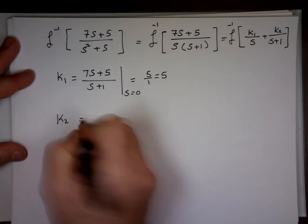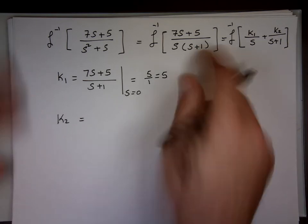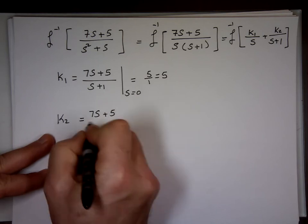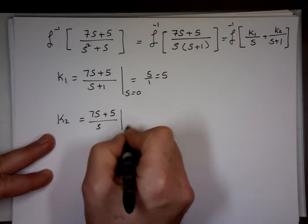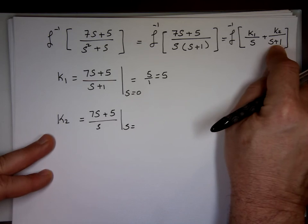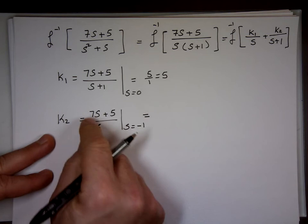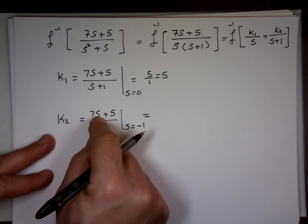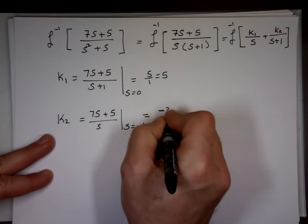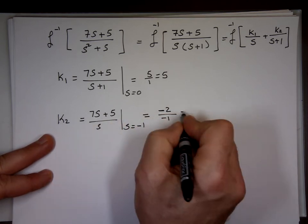K2 is sitting on top of S+1. Take S+1 out of this. When S equals what? What value makes this one 0? Negative 1. S is negative 1. What's 7 times the negative 1? Negative 7 plus 5. Negative 2. S is minus 1. What's the result? 2.